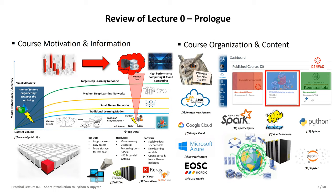The third ingredient is software — we have lots of open source and free software packages. Previously, students manually programmed artificial neural networks with MPI to parallelize them. Now you just download Keras, TensorFlow, or PyTorch — brilliant packages for deep learning. Deep learning is a highlight in the course showing how big data and cloud computing come together, though this is not a machine learning or deep learning course per se.